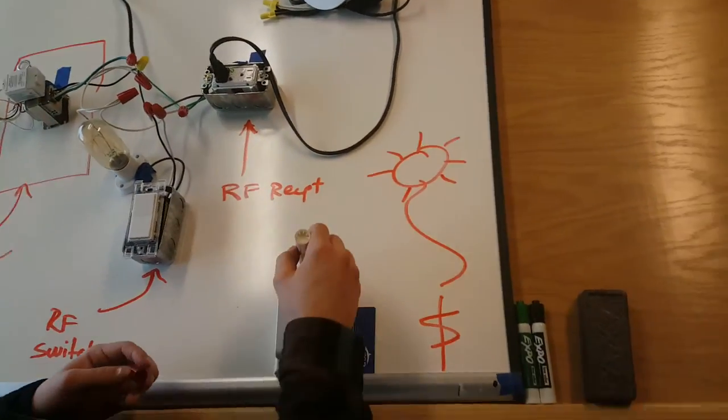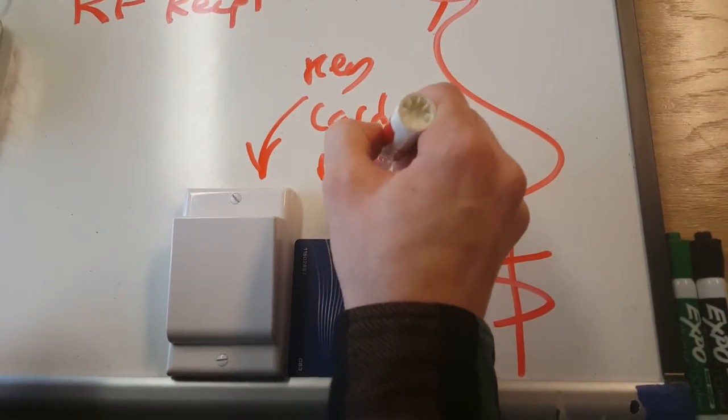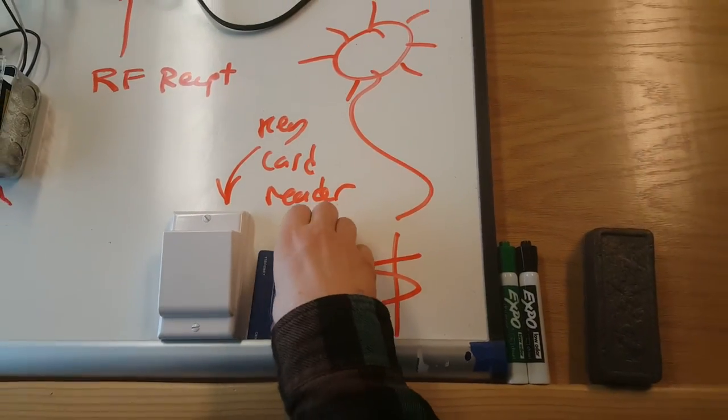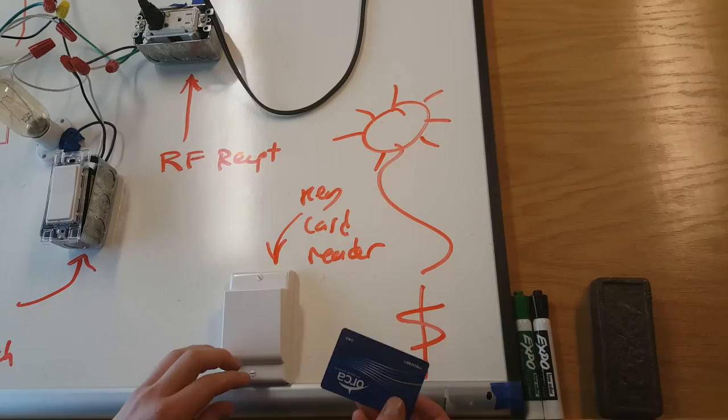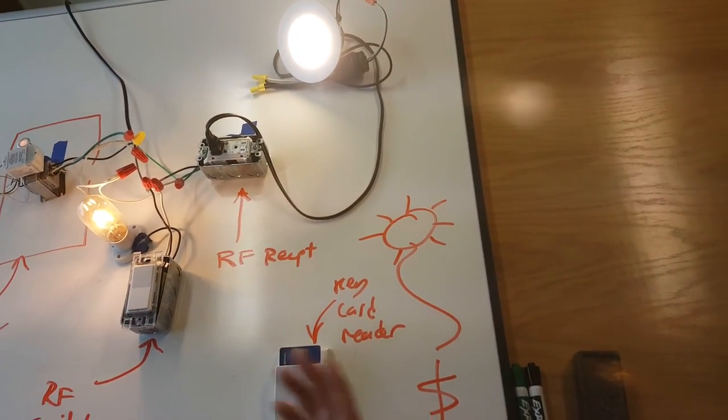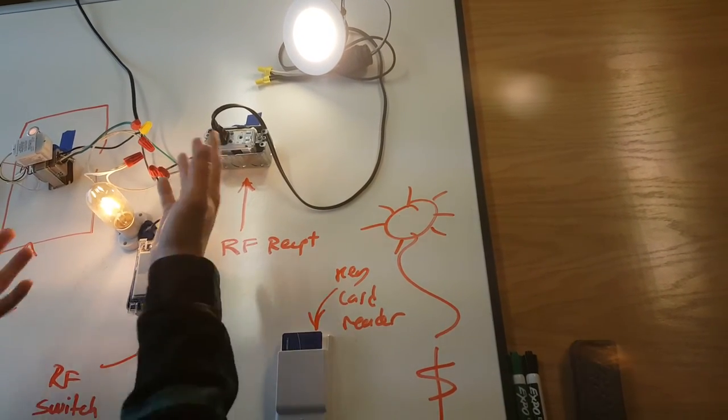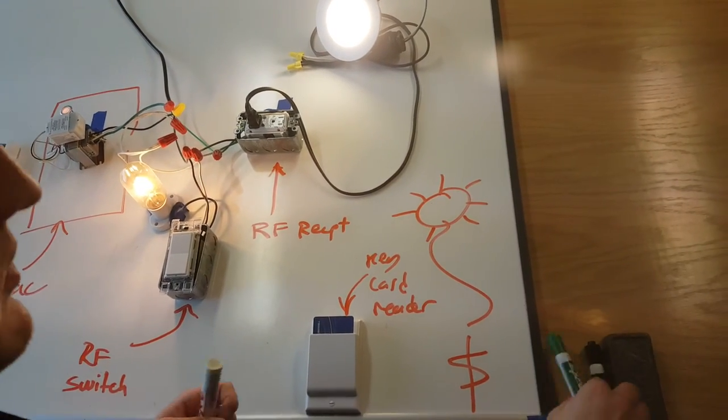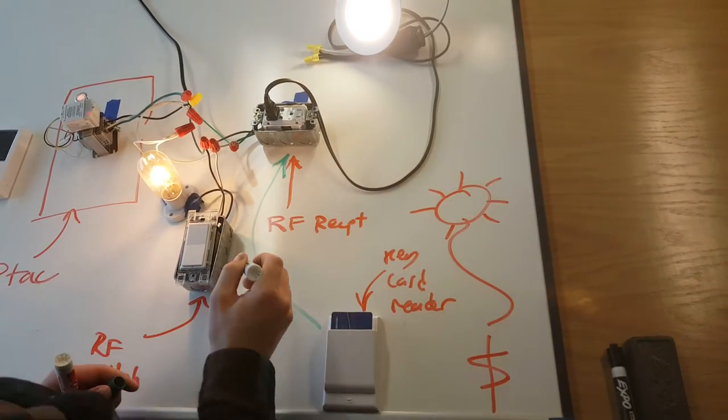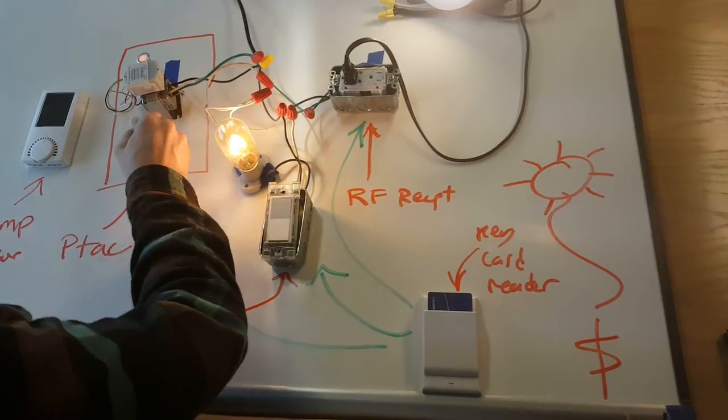But back at the front, let's talk about the key card reader. So when the guest walks into space, they'll put their key into the key card reader, and then that will enable all the radio frequency receiving products. So this is a transmitter, these are all receivers. So first it sends a signal to the receptacle, to the switch, and to the PTAC.